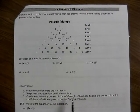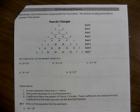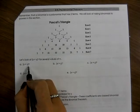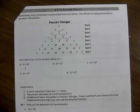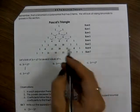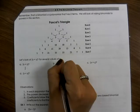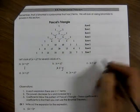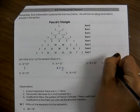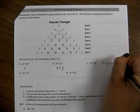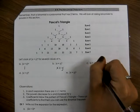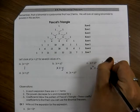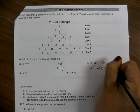We're going to take a look at these binomials, put them to powers, and see what patterns we notice. First of all, anything to the 0 power we know is 1. If you have something to the first power, it's just itself. And then x plus y squared means x plus y times x plus y, which gives us x squared plus 2xy plus y squared.